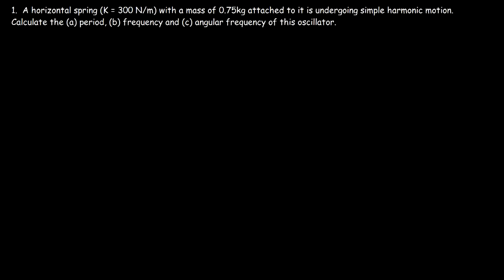In this video, we're going to talk about how to solve some basic simple harmonic motion problems in physics. So let's start with number one. A horizontal spring with a mass of 0.75 kilograms attached to it is undergoing simple harmonic motion. Calculate the period, frequency, and angular frequency of this oscillator.